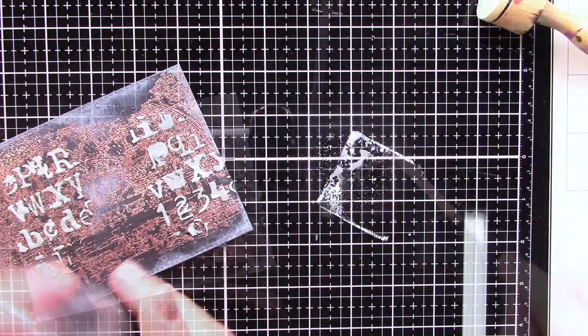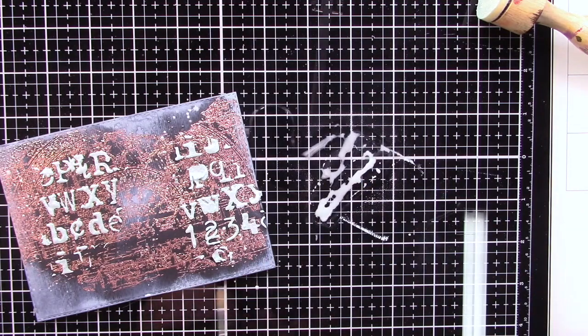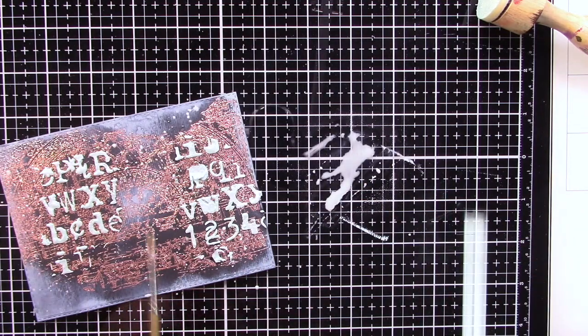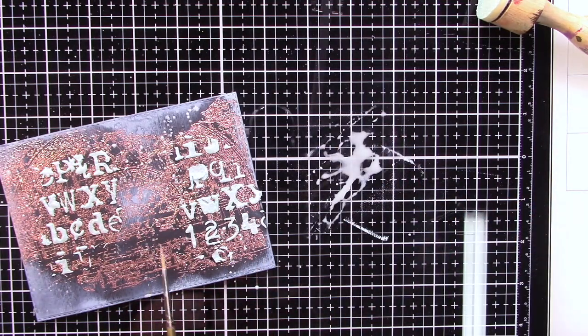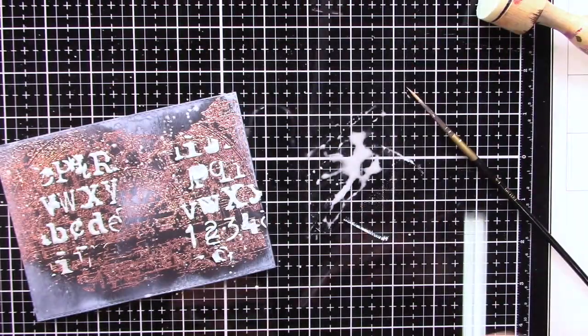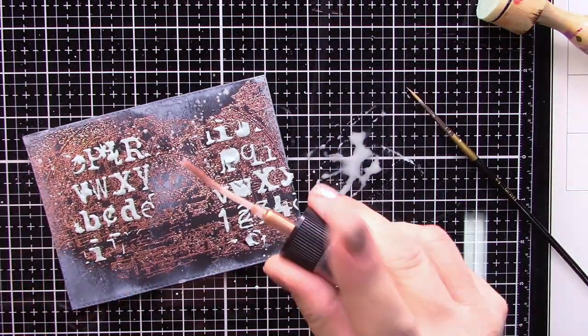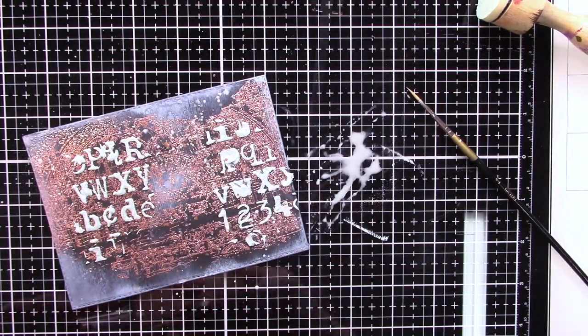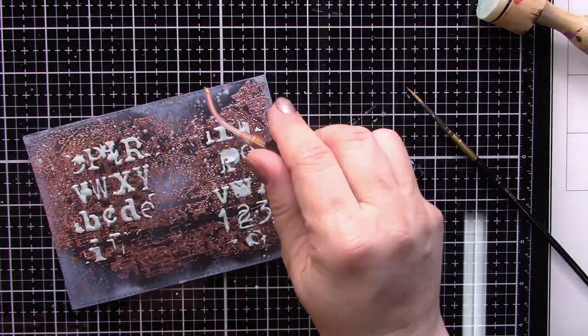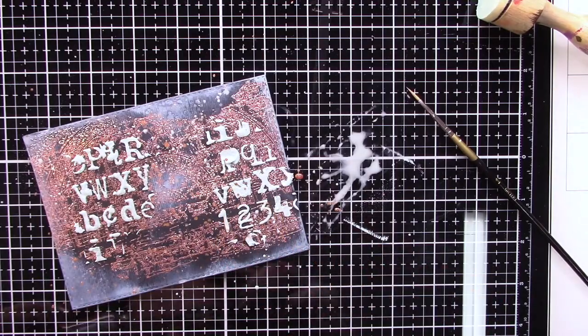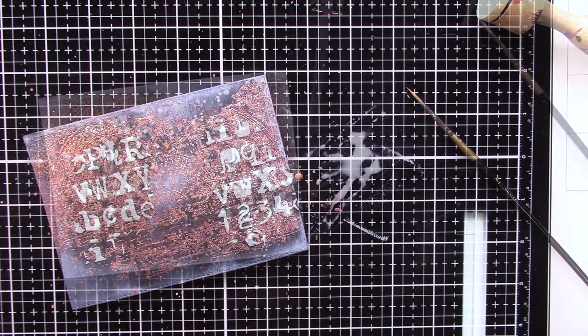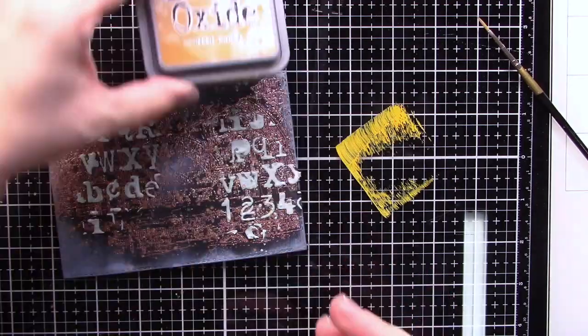I'm making splatters with speckle egg and later I will be making splatters with distress mica spray, and later I will make also splatters with yellow colors. I think it's spicy marmalade. This is the second one.